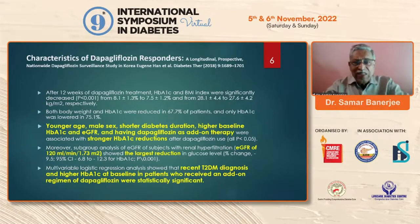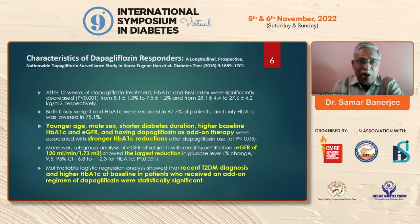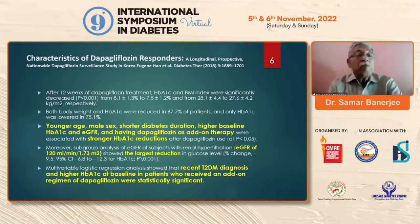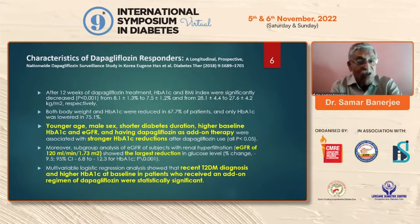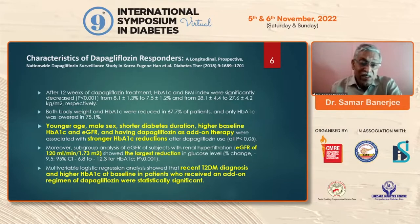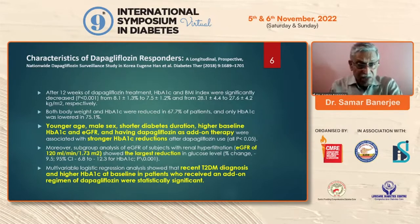After 12 weeks, HbA1c and BMI were significantly decreased — A1C from 8.1 ± 1.3% to 7.5 ± 1.2%, and BMI from 28.1 to 27.6. Both body weight and A1C were reduced in 67.7% and 75% of patients respectively, meaning about 7.3% had no weight response. Who are the responders? In this study: younger age, male sex, shorter diabetes duration, higher baseline A1C, higher GFR, and having dapagliflozin as add-on therapy — these had stronger A1C reduction. Subgroup analysis showed eGFR more than 120 had the largest reduction in glucose excretion.